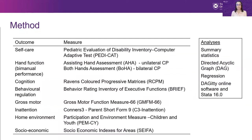Cognition was assessed using the Raven's Coloured Progressive Matrices, and there were outcome measures for gross motor function, behavioural regulation, inattention, home environment and socioeconomic status.